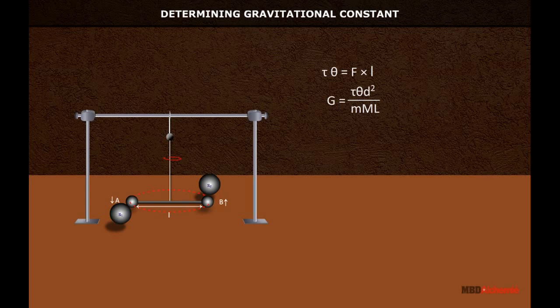Where D is the distance between the centres of neighbouring small spheres and large spheres.